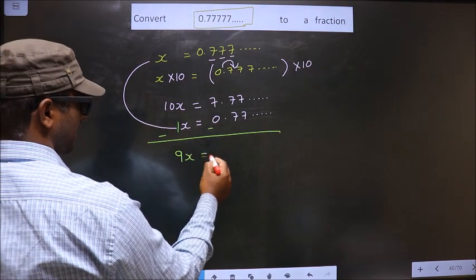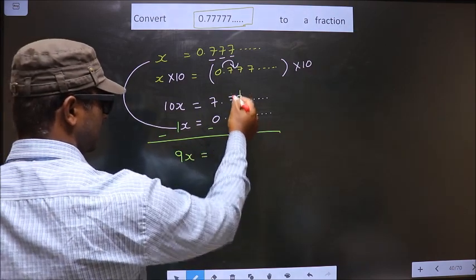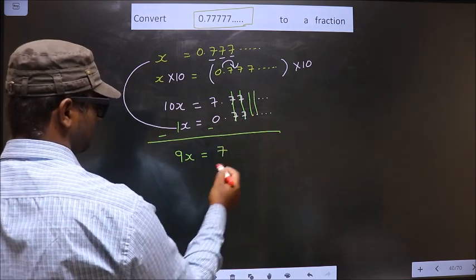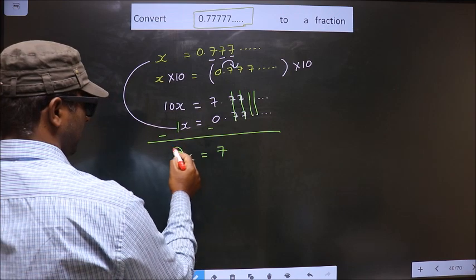Now you should remove 9. For that you divide by 9, so it cancels out and you get x equal to 7 by 9.